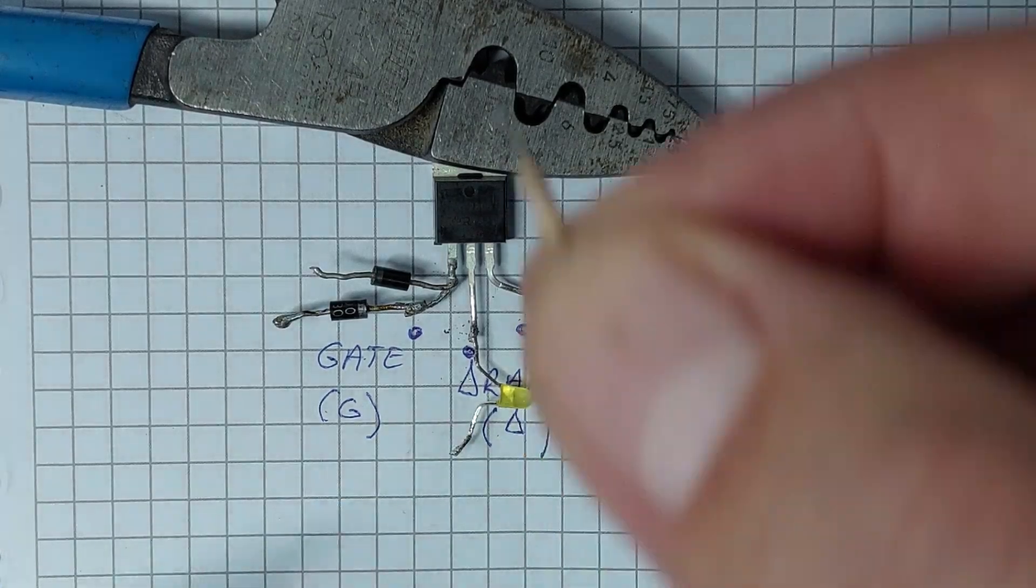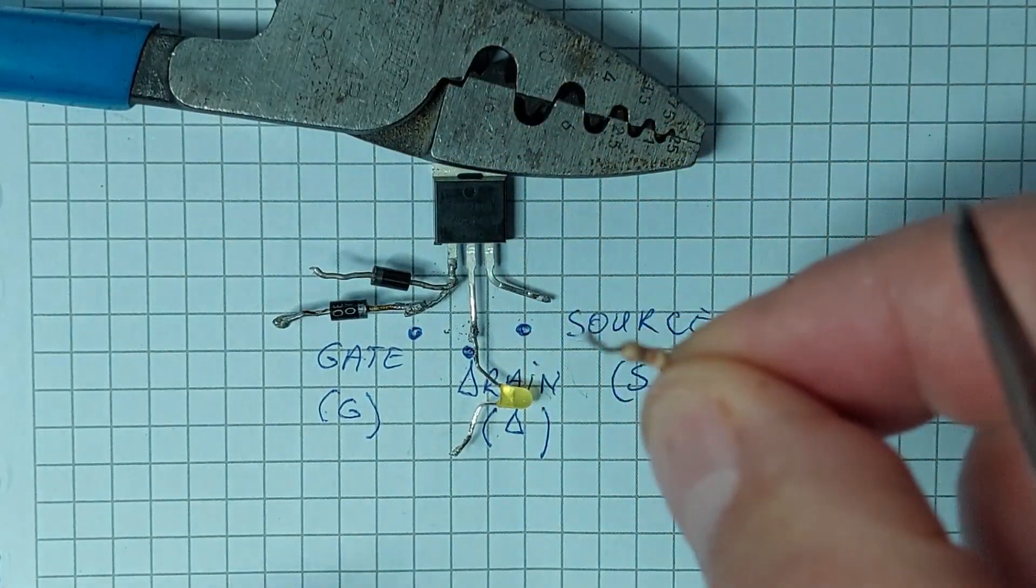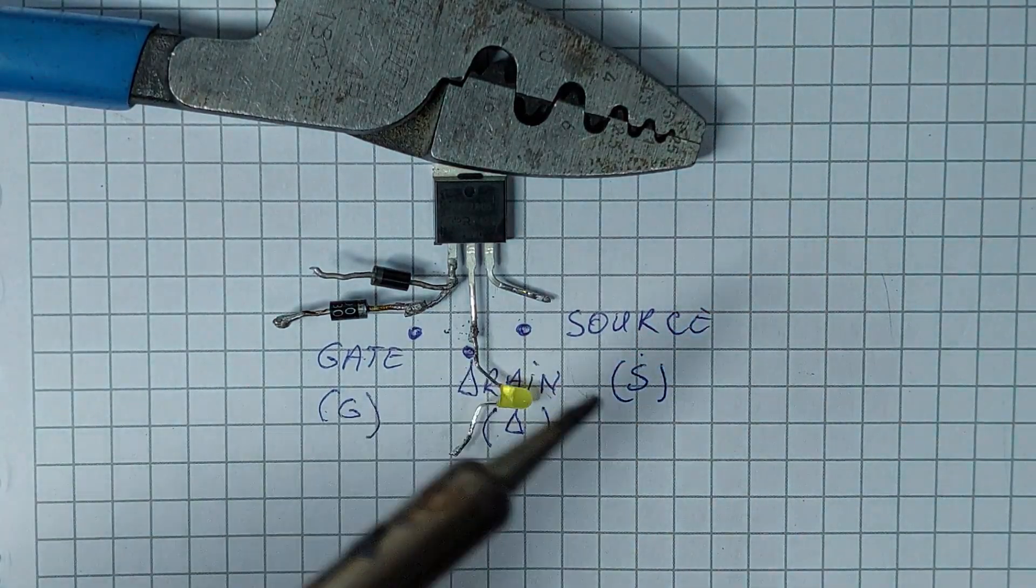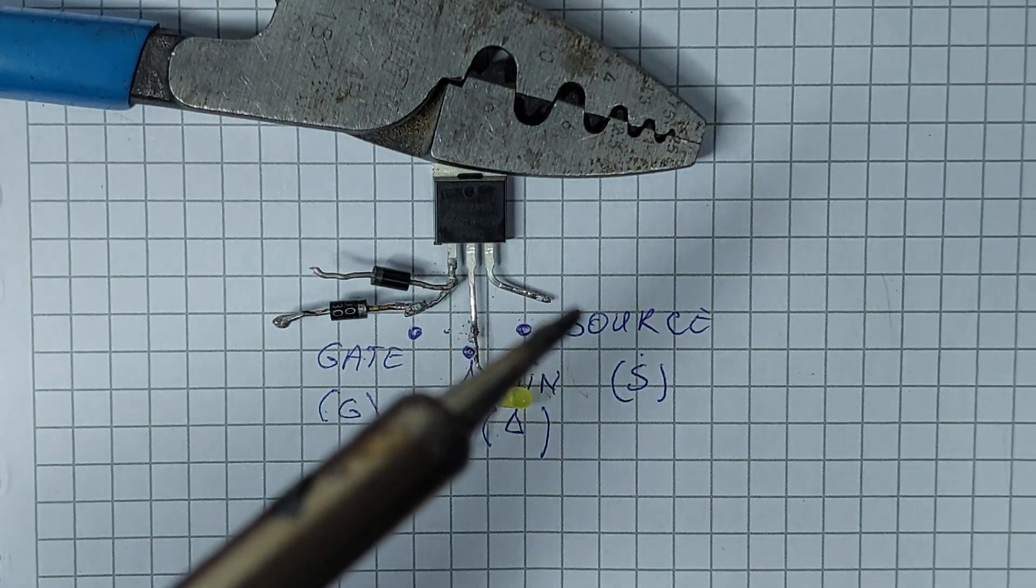To protect the LED, I'm adding a 1K ohm resistor in series. This resistor limits the current, ensuring that we don't damage the LED or the MOSFET itself.